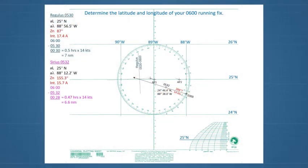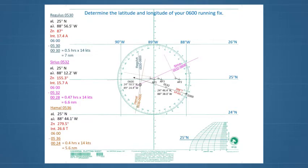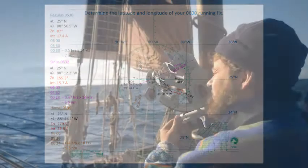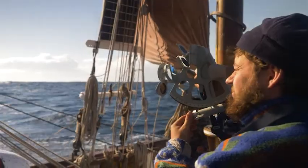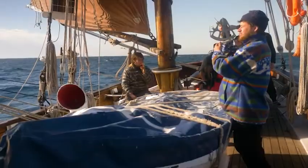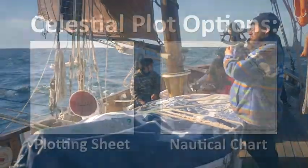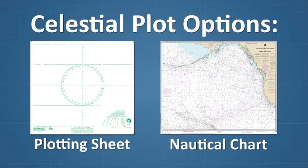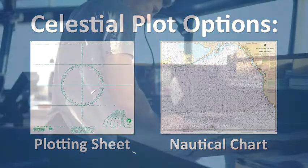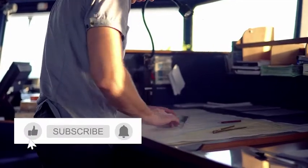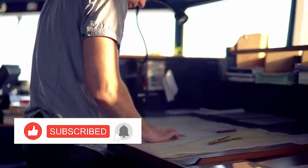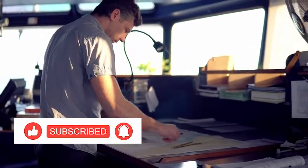Plotting a celestial fix or running fix requires several lines to be drawn. Since celestial navigation is often done in the open ocean away from land and other obstructions, a plotting sheet is better suited for celestial plots than a nautical chart. The position determined on a plotting sheet can always be transferred to a nautical chart if the navigator so desires.